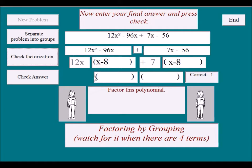Check the factorization, and now we want to see this group and this group have something in common. It's the x minus 8. When we take the x minus 8 away from this group, we get 12x. Take the x minus 8 from this group, we get a plus 7. If we were to foil this, it would give us this back.